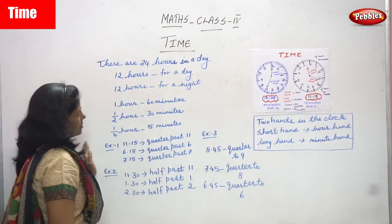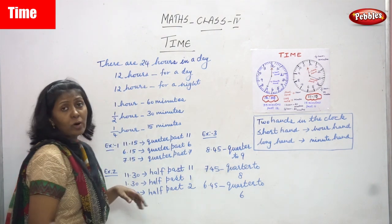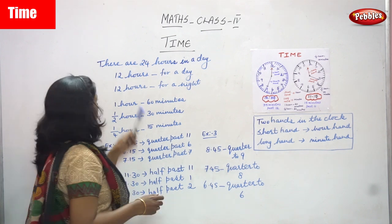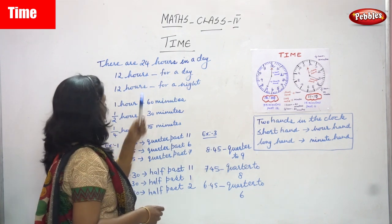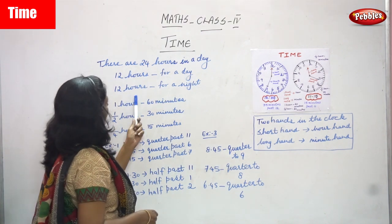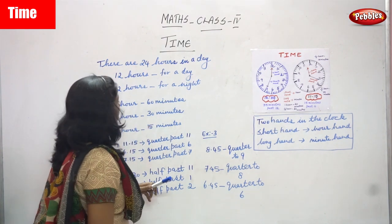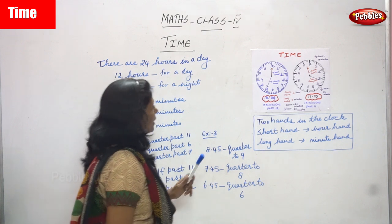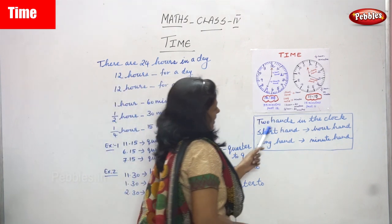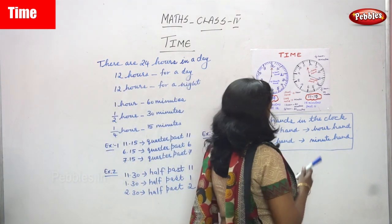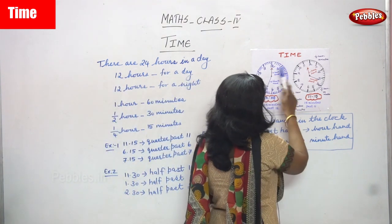There are 24 hours in a day. So 12 hours for a day and 12 hours for a night. And there are two hands in the clock. This is a clock and this is one more clock.